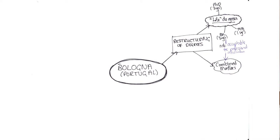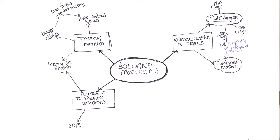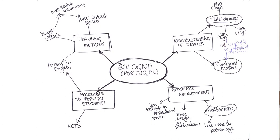Now I'm going to create another secondary bubble for teaching methods, as that's also an important area. Here I'm going to present greater student autonomy as a consequence of the bigger classes and fewer contact hours, though it doesn't have to be presented like that. A third category might be the fact that the Portuguese education system has now been able to open up to foreign students — partly by the use of the credit system, but also through having lessons in English, and this also links back to teaching methods. Finally, I'm going to create another branch for academic recruitment, to which I'll add a new idea: that publications now count for more than they used to, with a consequent reduction in the relative weight of institutional service.